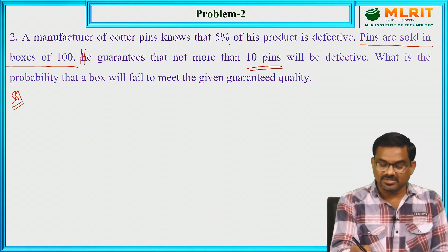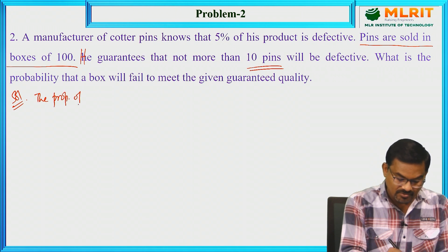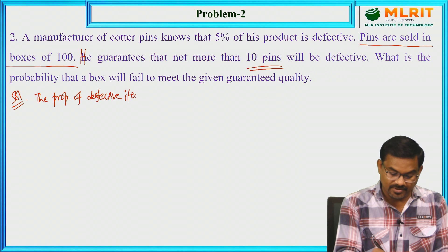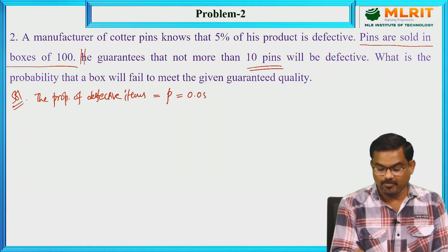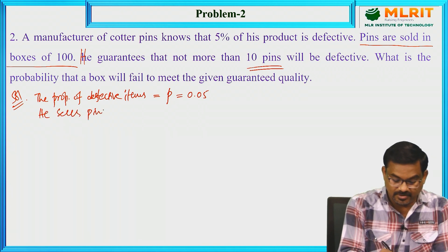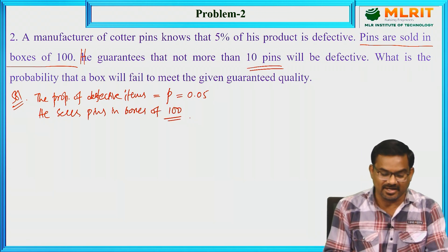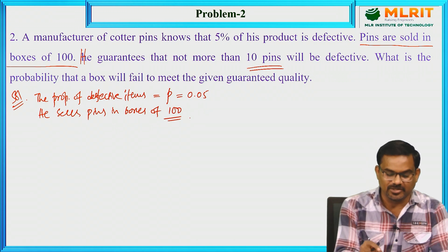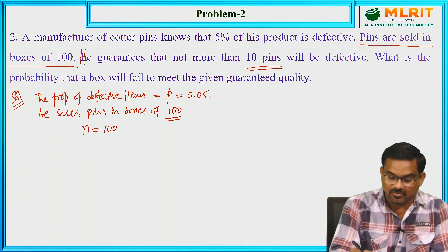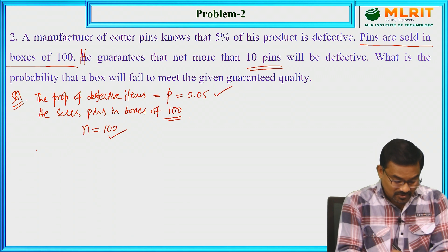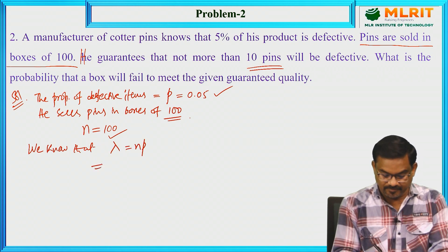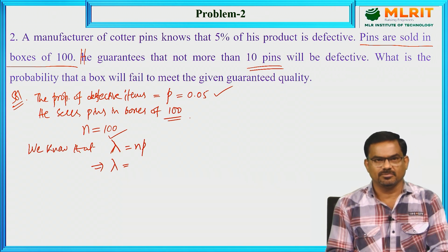The given data: 5% of the product is defective, so the probability of a defective item p = 0.05. The pins are sold in boxes of 100, so we consider 100 as the number of trials, n = 100. We have p and n, so λ = n·p. Since binomial distribution can be approximated by Poisson Distribution using λ = n·p, we get λ = 100 × 0.05 = 5.